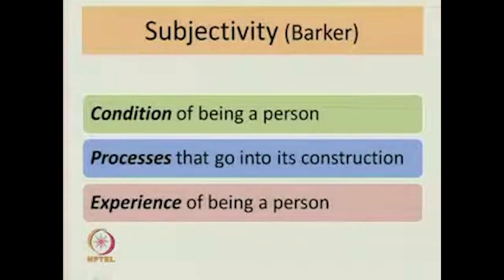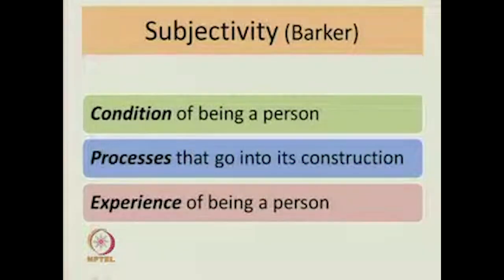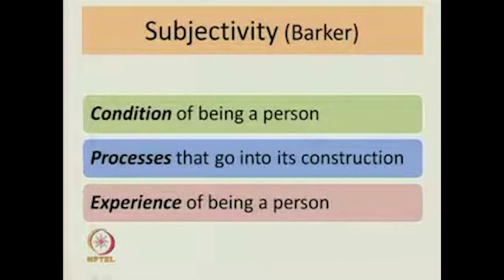So, subject is a self that comes about through the operation of general truths and shared principles from our socio-cultural arrangements. Now, Barker looks at subjectivity in three dimensions. One: subjectivity is the condition of being a person. Two: subjectivity refers to the processes that go into the construction of the person. Three: Barker also includes the self part — subjectivity is not just the condition or the processes, but also the very experience of being a person, that inner world, but the inner world in connection to culture.